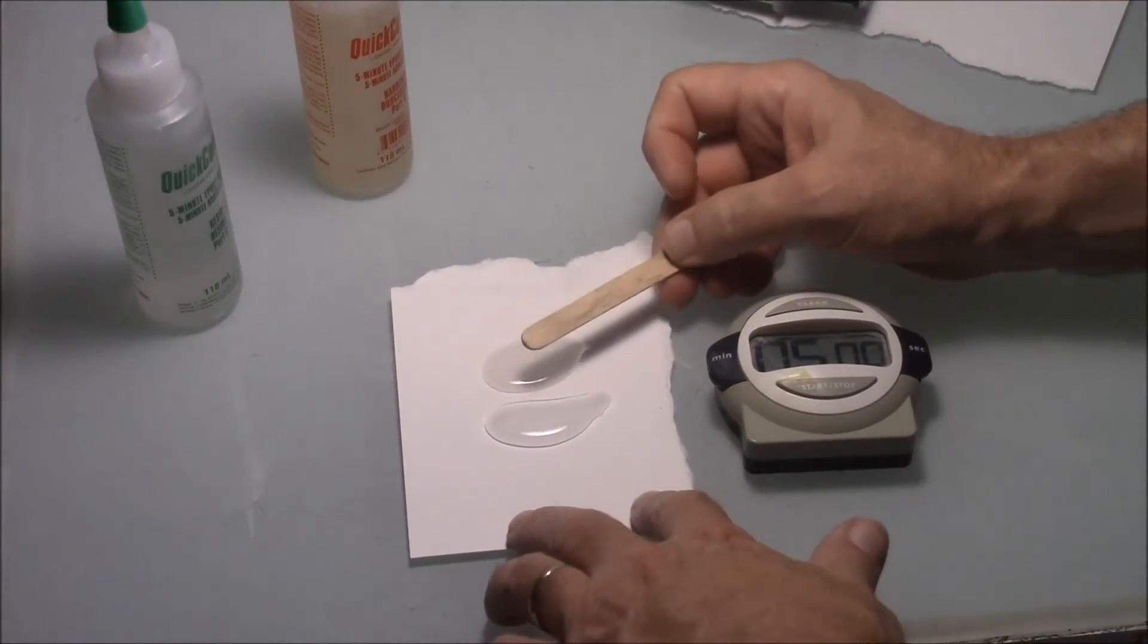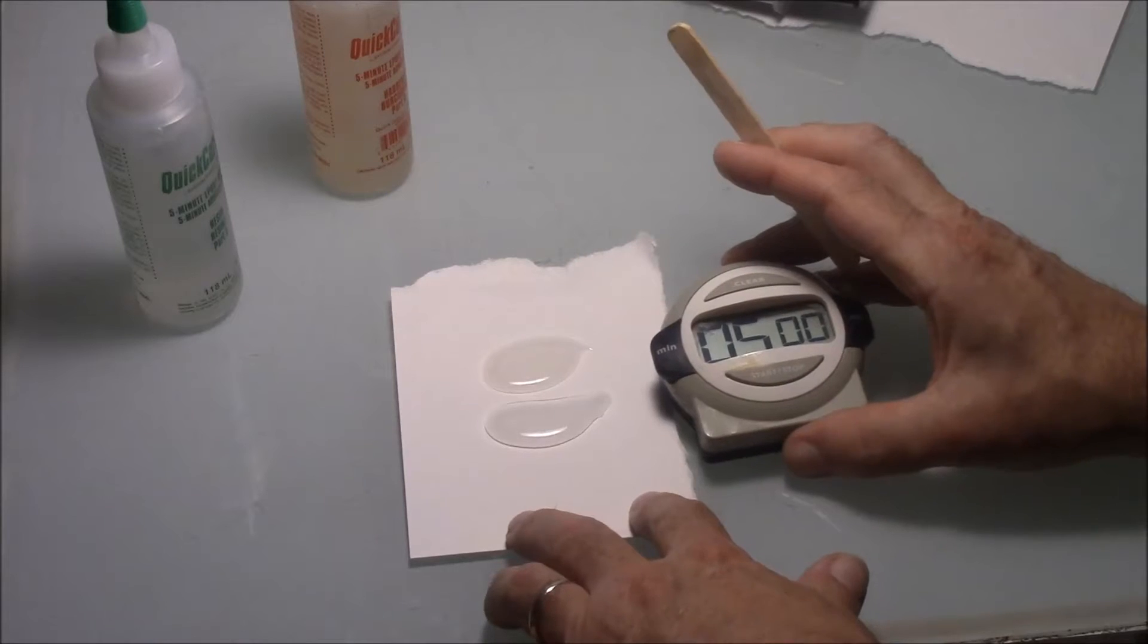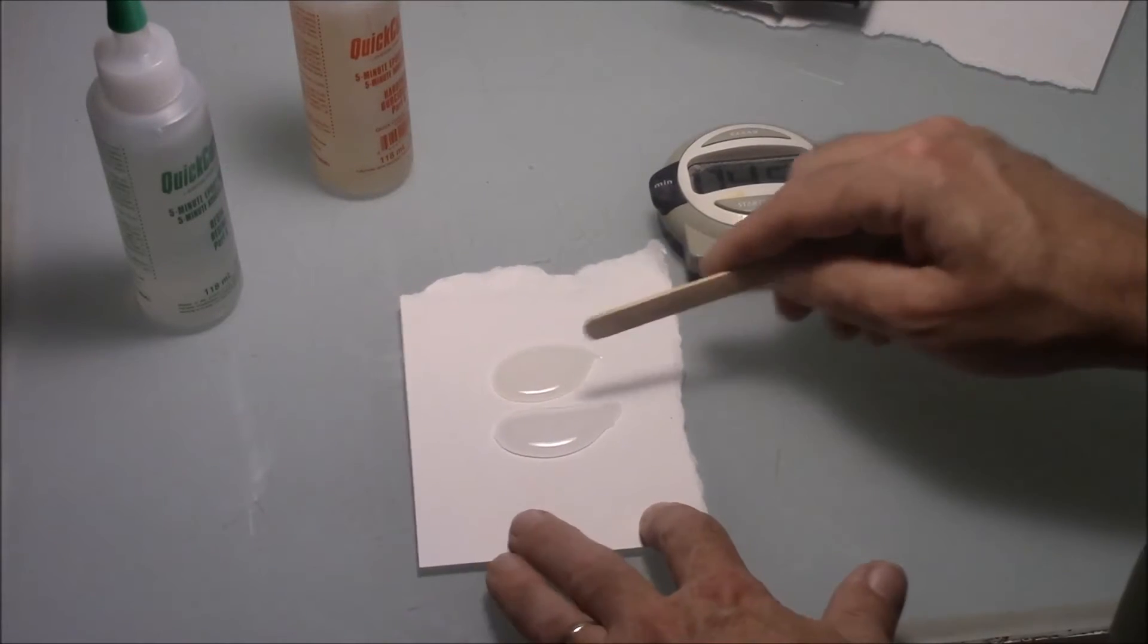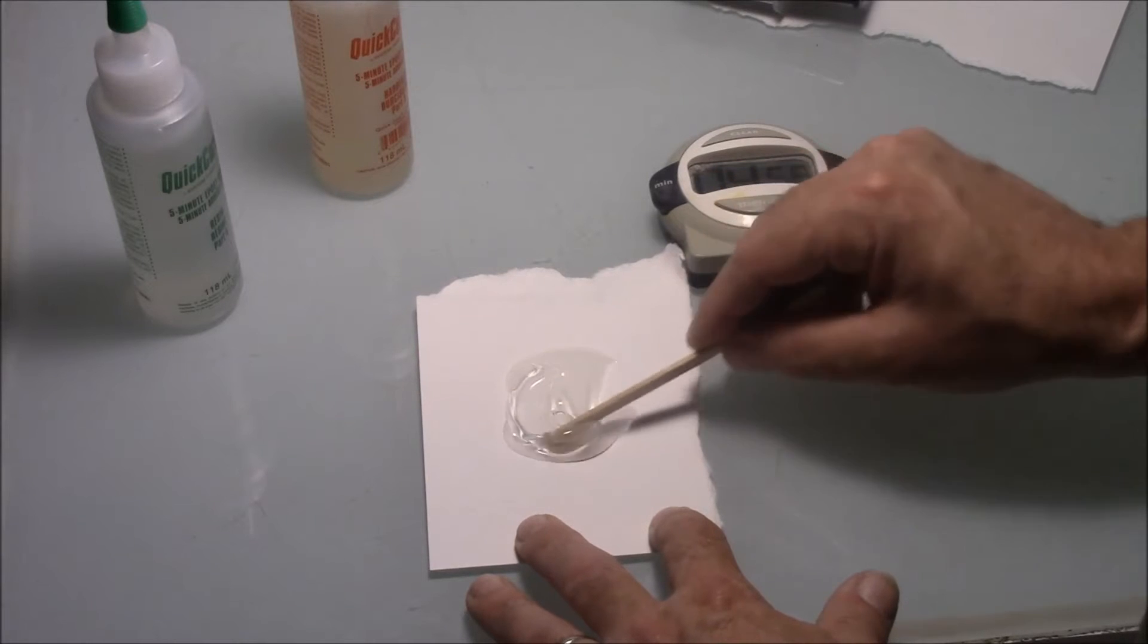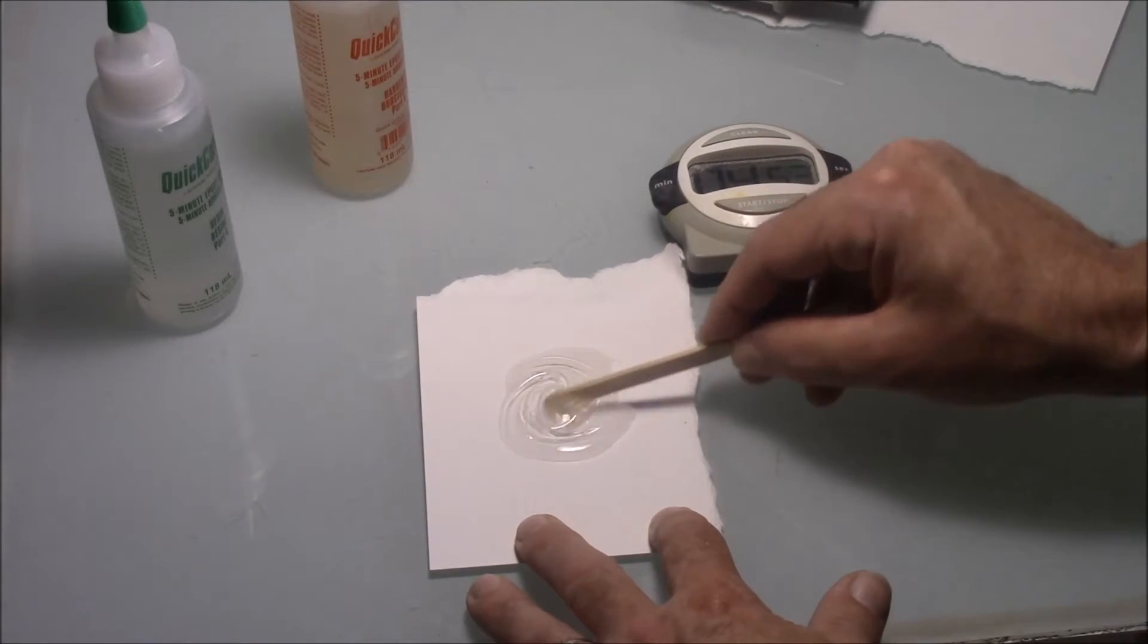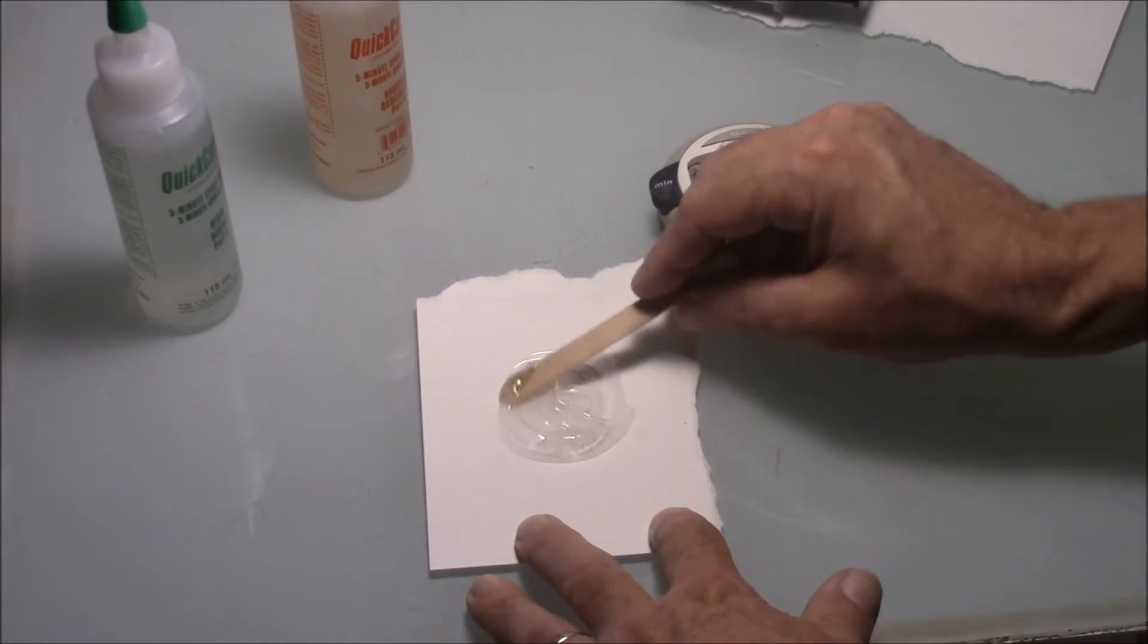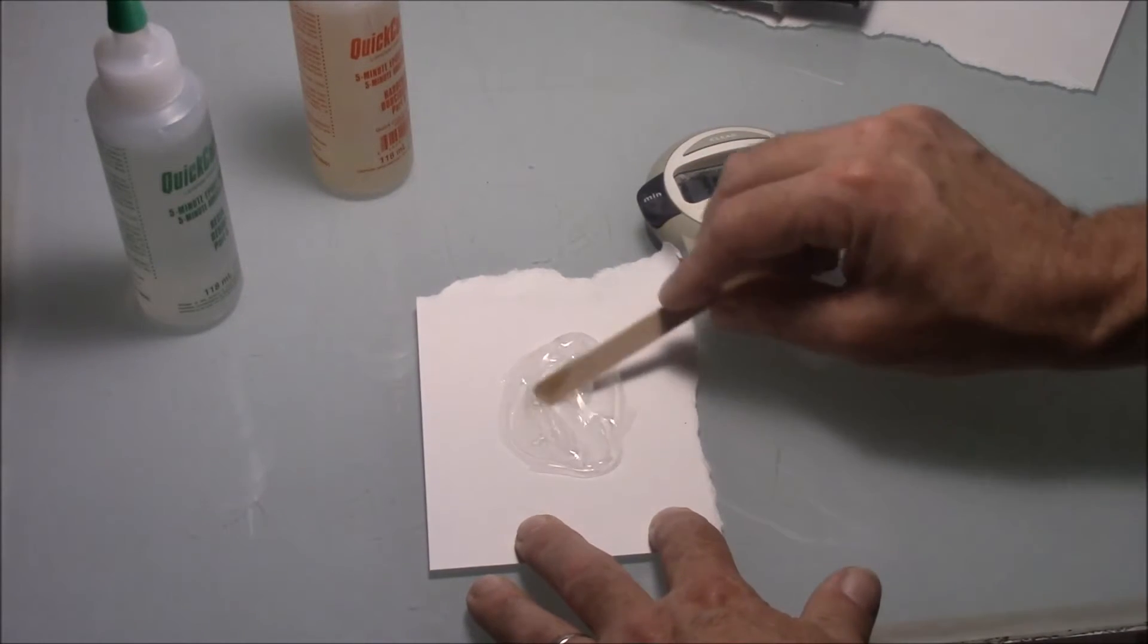Then you're going to take a popsicle stick and you're going to get your timer set. I'm going to go ahead and start the timer. And then I'm going to go ahead and mix this up. So I don't want to go crazy with it. I just want to gently stir. Now we've got five minutes to apply this stuff before it's going to start to thicken up and take a texture.